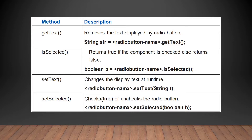Now let us discuss the methods of JRadioButton: getText, isSelected, setText, and setSelected. The isSelected method returns true if the component is checked, else returns false. The setSelected method checks or unchecks the radio button — if true it checks it, if false it unchecks it.